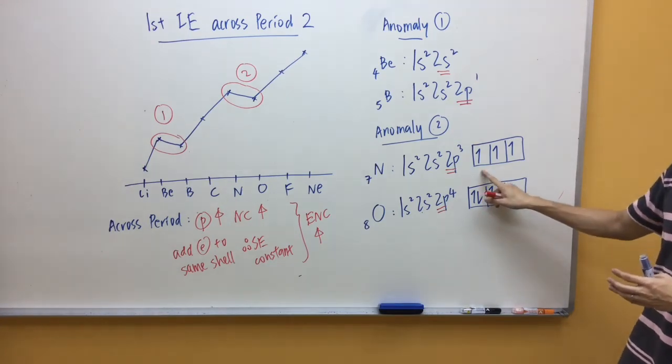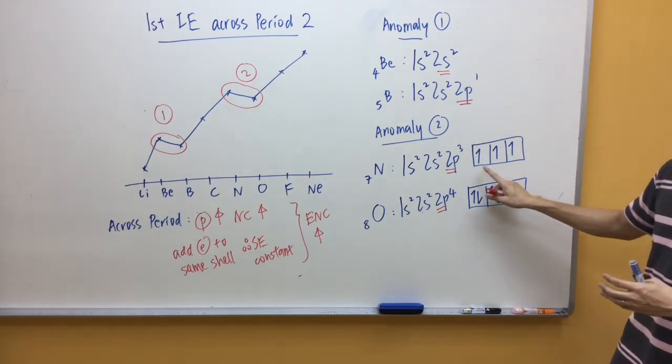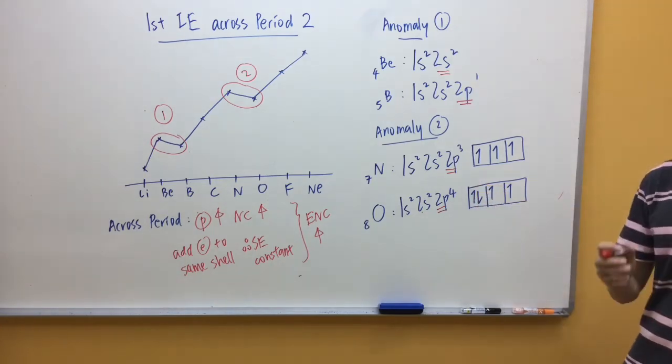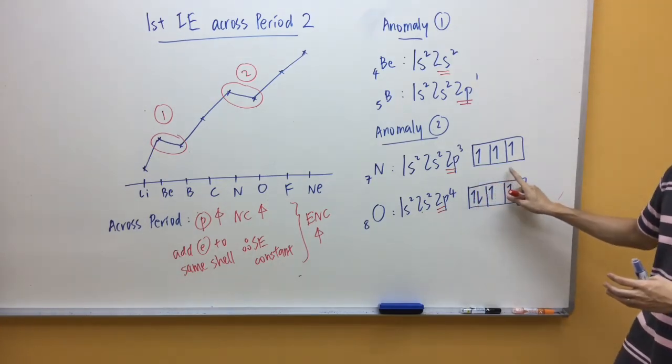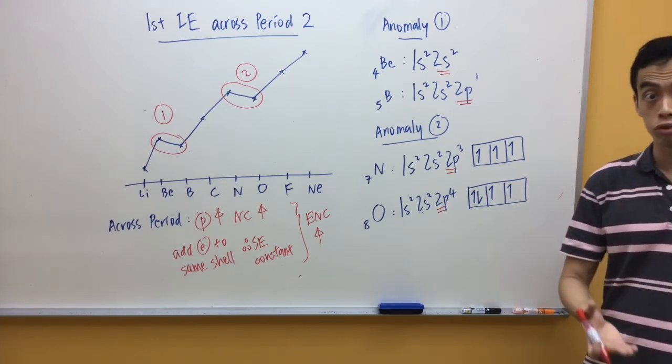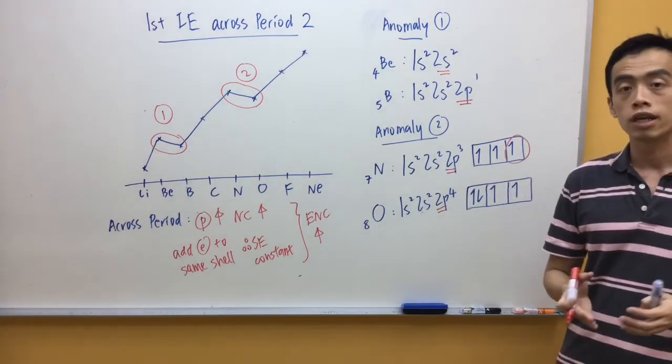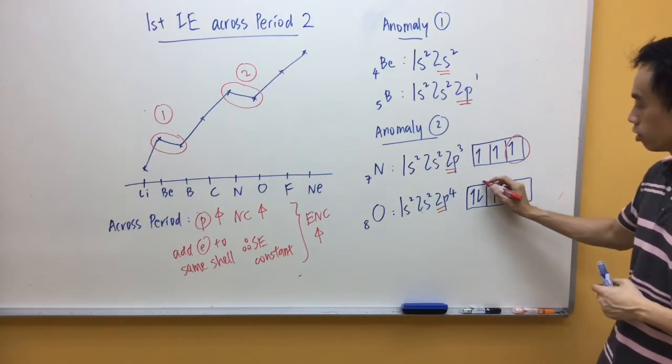Now, when I want to remove an electron from my nitrogen, I can just take away any of this electron from my 2p subshell because all these three orbitals have the same energy level or they're degenerate. Now, to remove the electron from oxygen, what we will do is we will take away this electron.